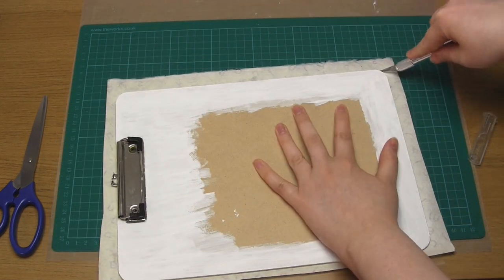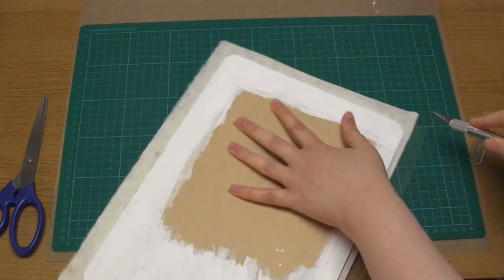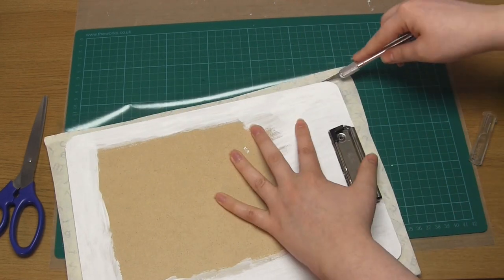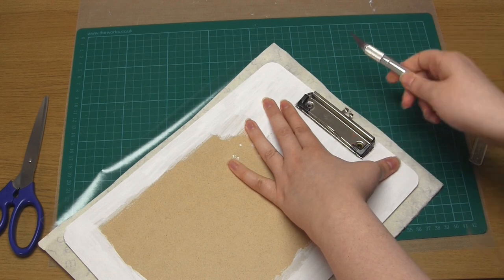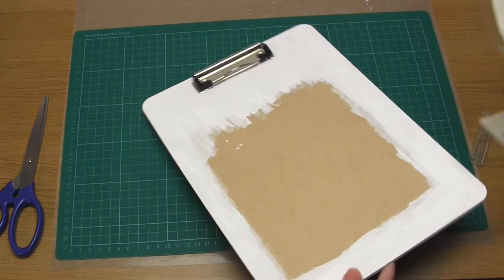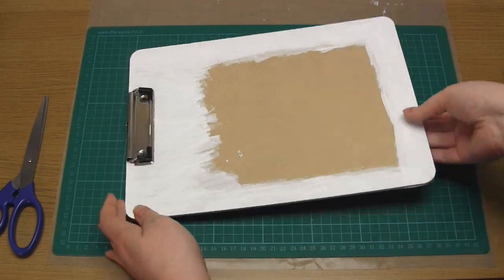Once you've added the contact paper, just turn your clipboard over and place it on a cutting mat. Then use your exacto knife to remove the excess papers around the outside. And that's the back of the clipboard completed.